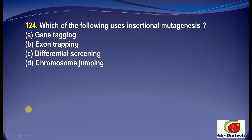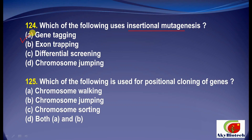Question on insertional mutagenesis: Which of the following uses insertional mutagenesis? The correct answer is gene tagging. Question 25: Which of the following is used for positional cloning of genes? The correct option is D — chromosome walking and chromosome jumping.